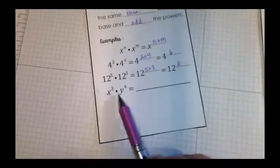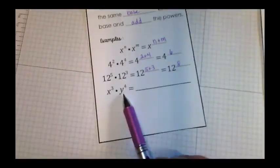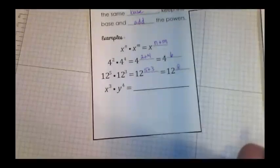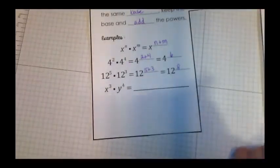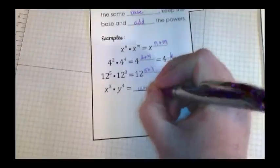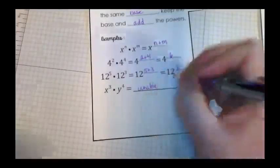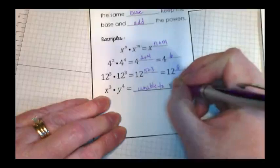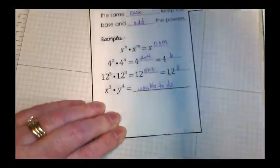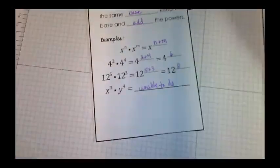We have x to the third times y to the fourth. What do you notice is going on here? We have different bases. We can't do this one. Okay, so we're unable to do that one. Why? Because it has two different bases.